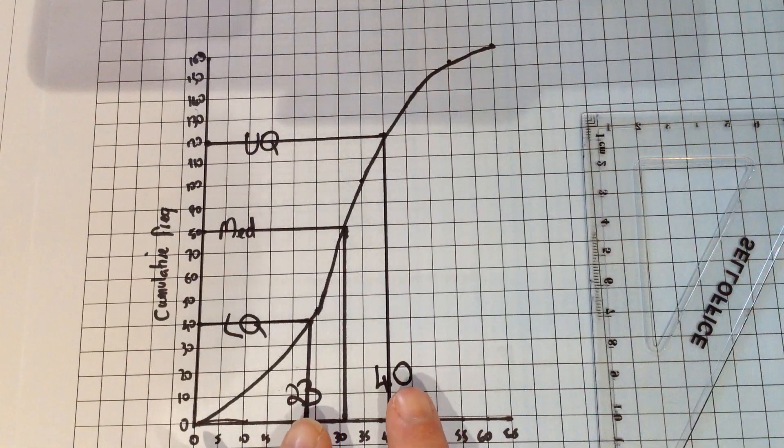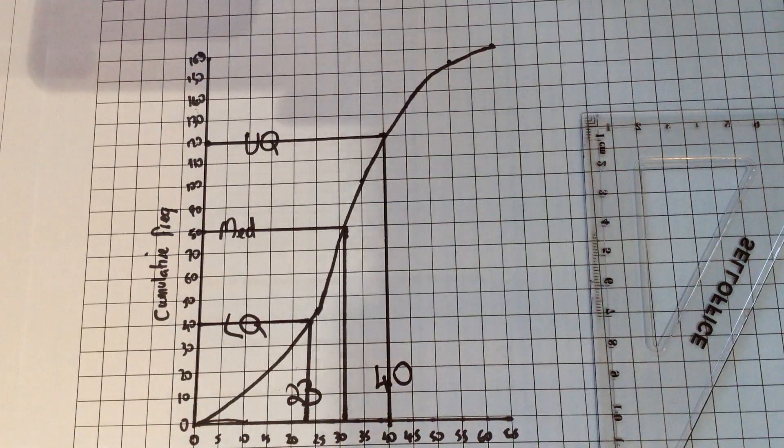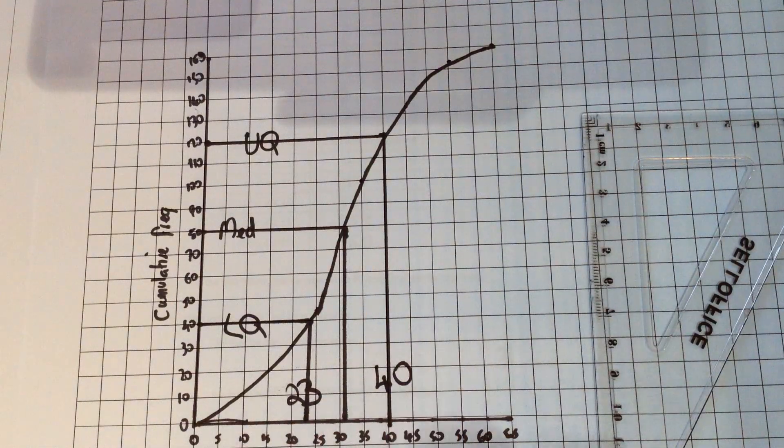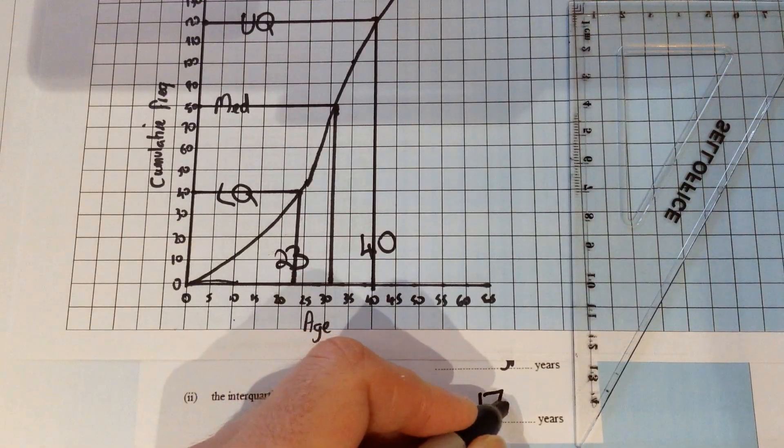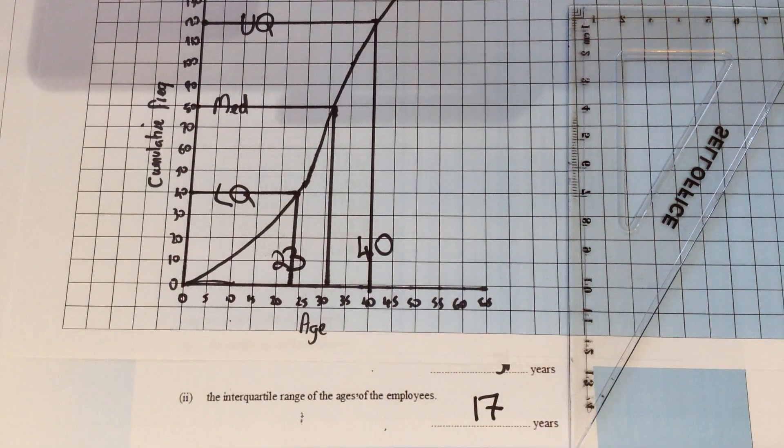So the interquartile range is the difference between these two. The difference between 40 and 23 is 17. So I'm going to put on here that the interquartile range is 17.